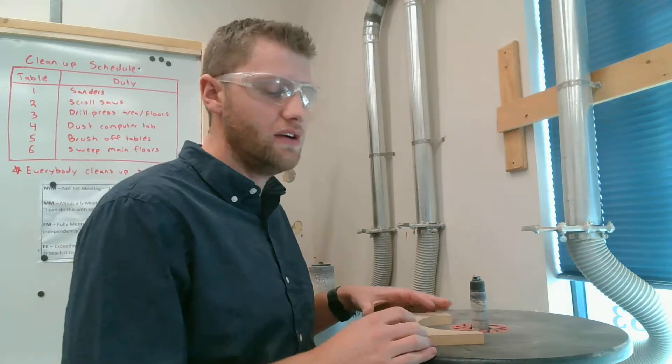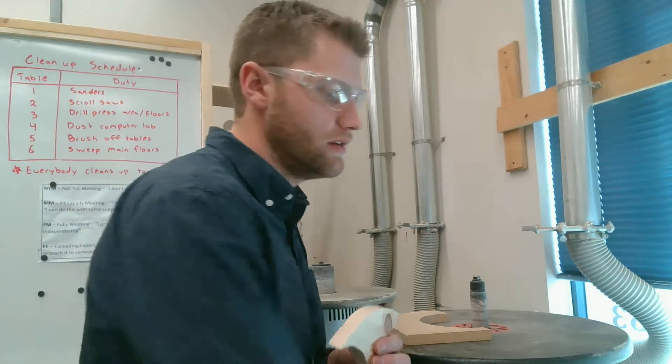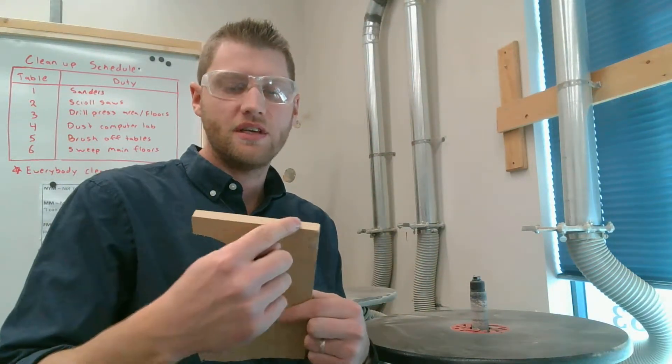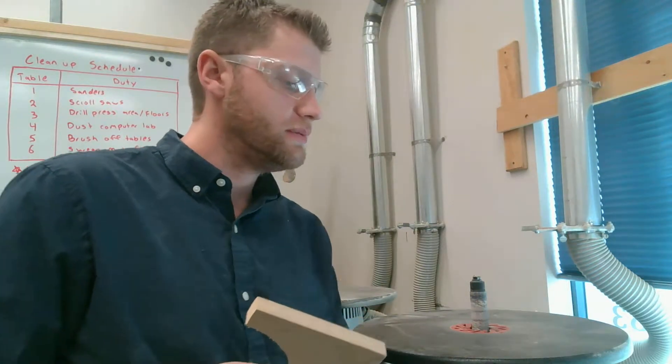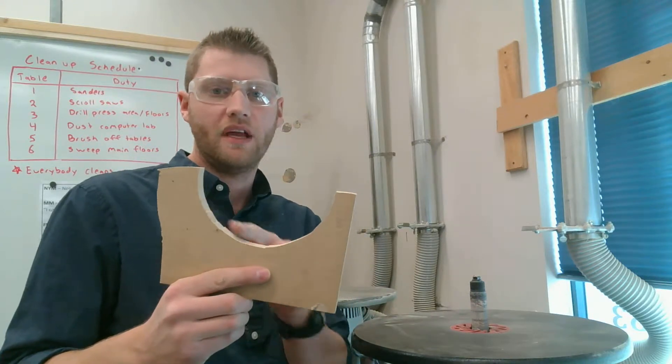When using our spindle sander, instead of using it for outside curves or for sanding parts that are flat like our disc sander, we use our spindle sander to sand inside curves like this.